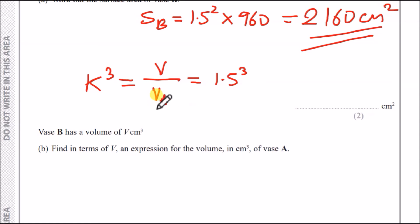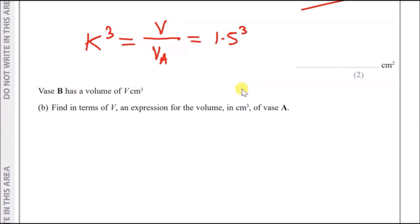And this is supposed to equal the scale factor cubed, so 1.5 cubed. Now, they just want us to make vase A the subject. To do it, you just times V_A across and divide 1.3 cubed across. So it'll be V_A equals V over 1.3 cubed. Now, 1.3 cubed is actually, I think you can leave your answer like that. It's 27 over 8. So it'll be V over 27 over 8. And if you tidy this up, because you've got a fraction on the bottom half, if you divide a fraction, it flips upside down and you multiply. So it's going to become 8 over 27 times V. And that's it, guys.